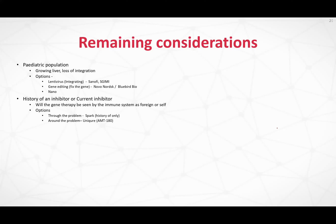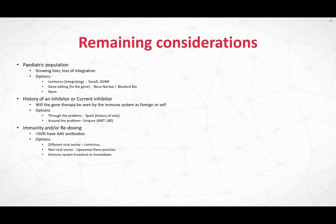There are two options for inhibitor patients: you can go through the problem — that's the Spark SPK-8016, which just tries factor eight and sees what happens — or you can go around the problem, which is Unicure's AMT-180, using an activated factor nine to treat patients with factor eight deficiency. That's really clever. For immunity and redosing, the response is effectively the same: we still have to get over that initial set of antibodies. We've seen some studies where over 50% of people have AAV antibodies. Options include using a different viral vector such as lentivirus, non-viral vectors called liposomal nanoparticles, or knocking down the immune system temporarily by plasmapheresis.